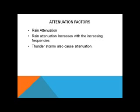Attenuation factors. There are two main factors: rain attenuation and thunderstorms that cause attenuation. Rain attenuation has a variable response to frequency — it increases rapidly with increasing frequency. So we keep the frequencies low in order to avoid rain attenuation.